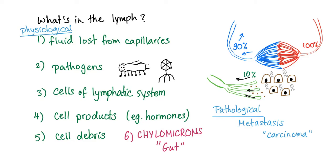So what's in the lymph? Physiologically: fluid lost from the capillaries, pathogens, cells of the lymphatic system, cell products such as hormones, cell debris and waste products. In the gut, you will add chylomicrons — fat droplets surrounded by proteins. Pathologically: metastases, especially carcinoma, because carcinomas love the lymph while sarcomas love the blood. Big difference.